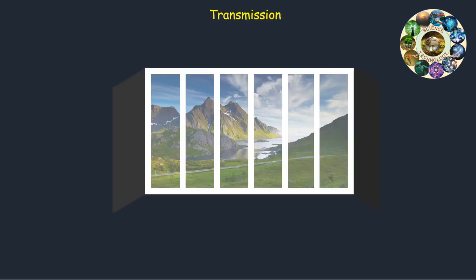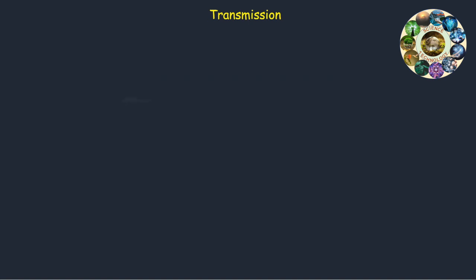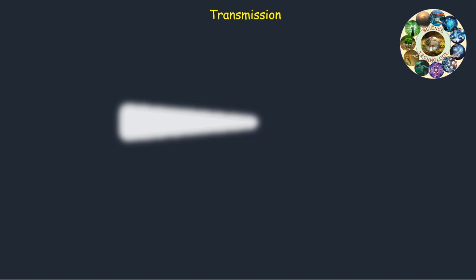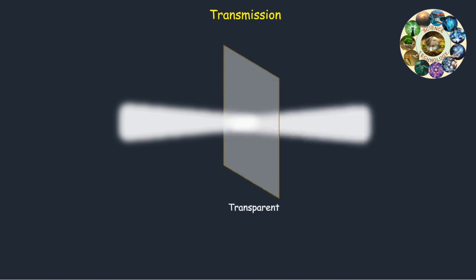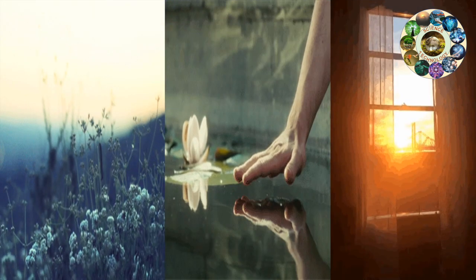Light transmission takes place through transparent materials. The word transparent refers to something that is see-through or clear. Transparent objects are items through which you can clearly see things on the other side. Almost all the light that comes in contact with transparent materials passes directly through them, and you can even see intricate details such as colors through transparent objects. Materials like air, calm water, and clear glass are called transparent.